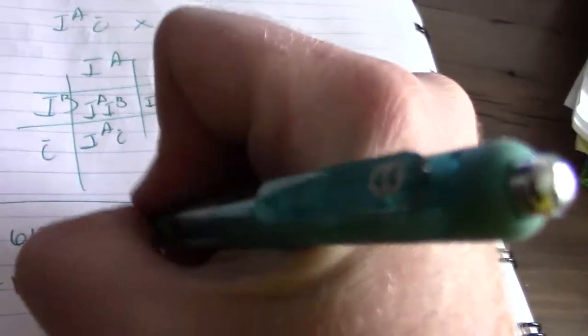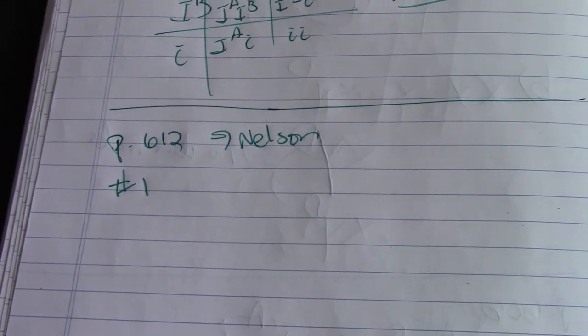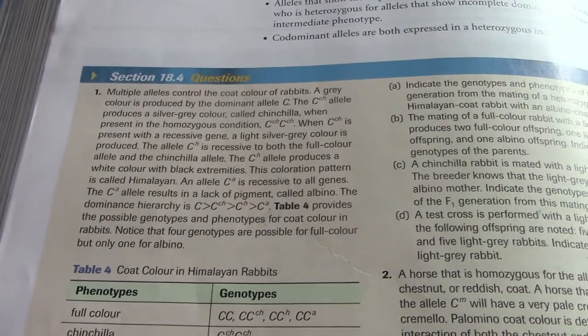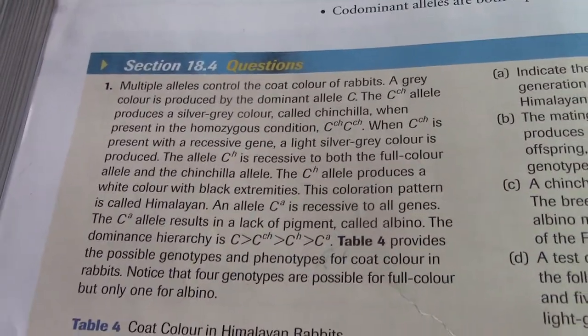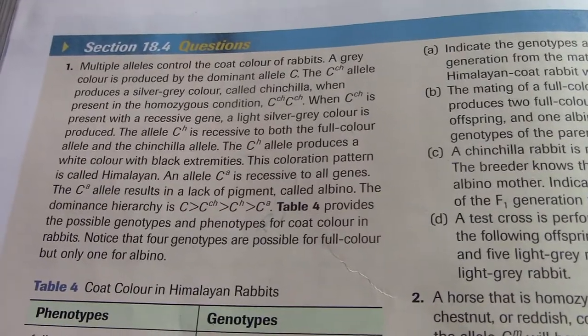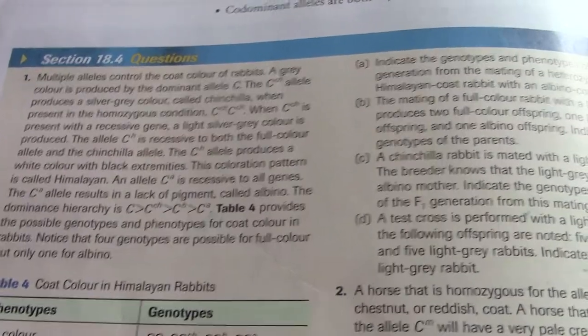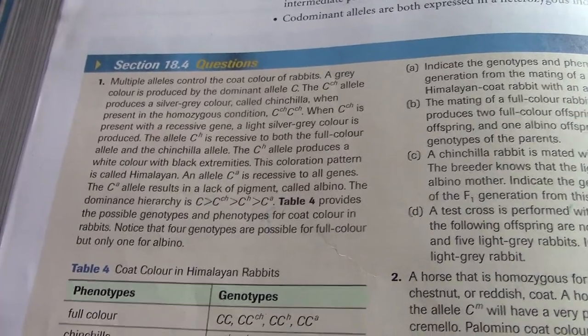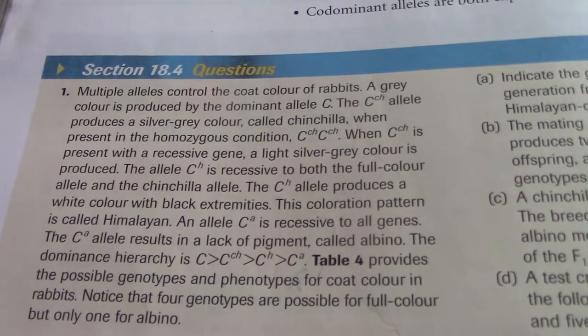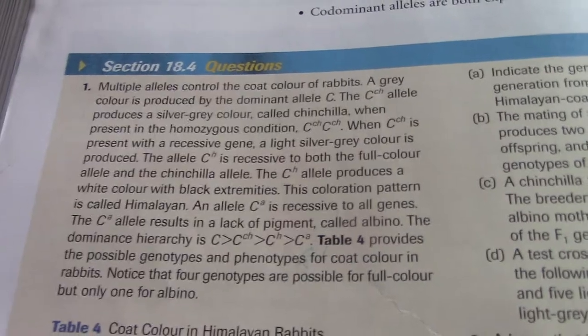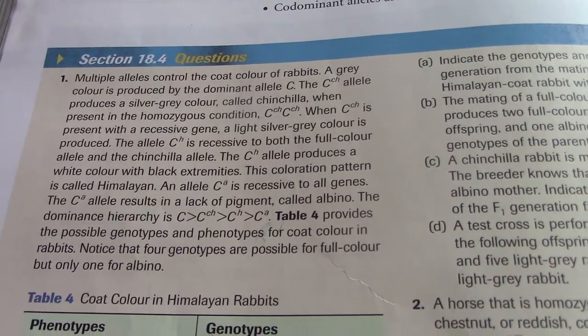So in your Nelson textbook, this is a great example of dominance hierarchies. So this is page 612, number one, and this is in Nelson. Okay, so the question says multiple alleles control the coat color of rabbits. A gray color is produced by the dominant allele big C. The CCH allele produces a silver gray color called chinchilla. When present in the homozygous condition, CCH CCH. So you get chinchilla with CCH CCH. When CCH is present with a recessive gene, a light silver gray color is produced. The allele CH is recessive to both the full color and the chinchilla allele. The CH allele produces a white color with black extremities. This is called Himalayan. An allele CA is recessive to all genes. So you have this dominance hierarchy.